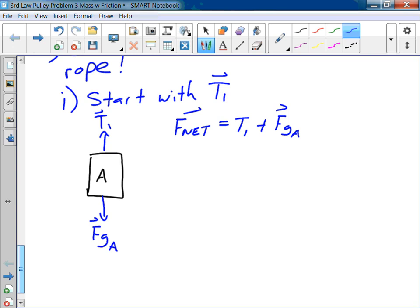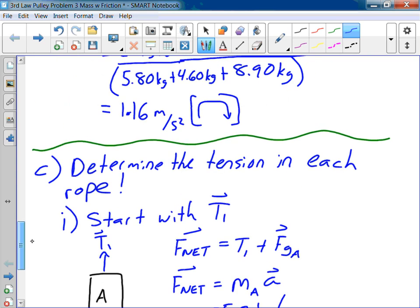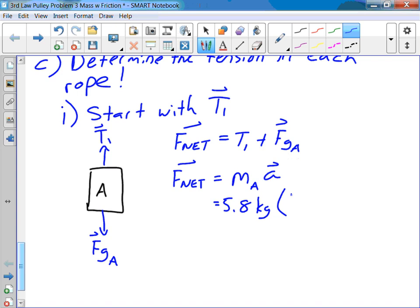Again, the second way to express F_net is mass times acceleration. What was the mass of block A? 5.8. And the acceleration of the system? 1.16. Can someone just throw that in a calculator? 6.7. 6.73. We've been keeping three sig figs I think. 6.73.